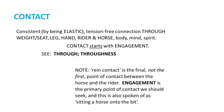Contact is consistent, elastic, tension-free connection through weight, seat, leg, hand, rider and horse, body, mind, and spirit. Contact starts with engagement. Important note: rein contact is the final, not the first, point of contact between the horse and rider. Engagement is the first point of contact we should seek, and this is also spoken of as sitting a horse onto the bit.